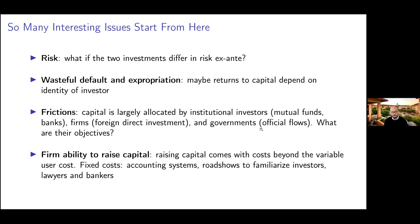People have started thinking about risk: what if these two firms have different risks? You wouldn't want to always put all your money into the firm with the highest return — you want to risk-adjust. What if there is wasteful default or expropriation? Maybe the returns to the investment depend on the identity of the investor. Maybe foreign investors get a much different rate of return than domestic investors because we selectively expropriate foreigners. You can also think more deeply about frictions: a lot of capital is allocated by institutional investors — mutual funds, banks, insurance companies — or by firms themselves through direct investment, or governments through official flows.